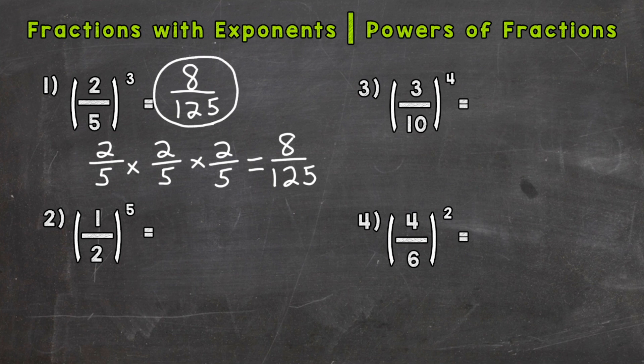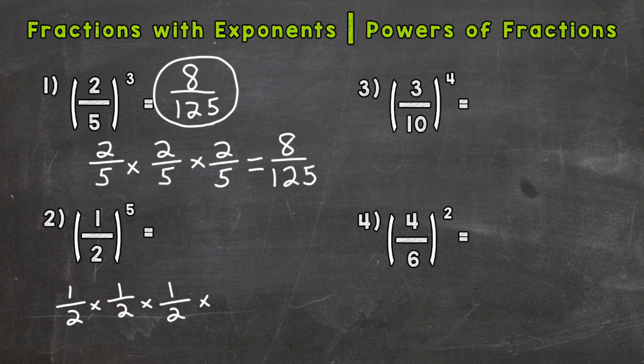Number two: one-half to the power of five. Again, that does not mean one-half times five. It means expand our base, which is one-half, out five times and multiply. So we are multiplying one-half by itself five times.